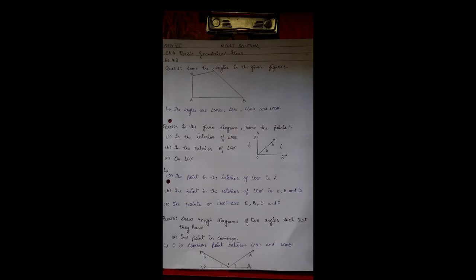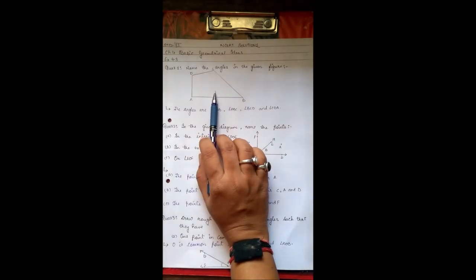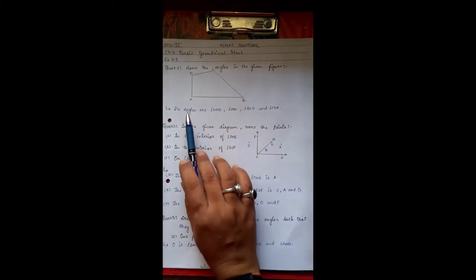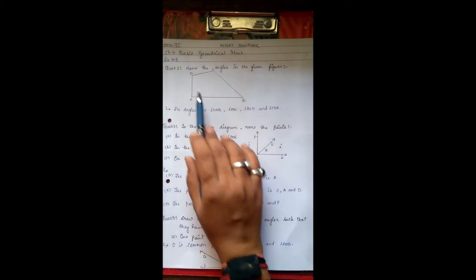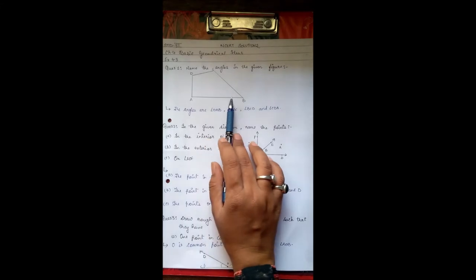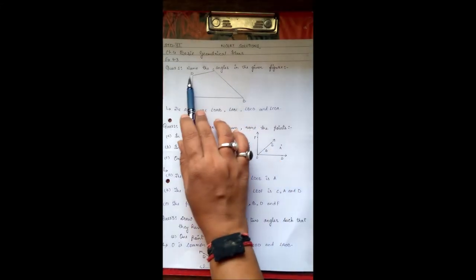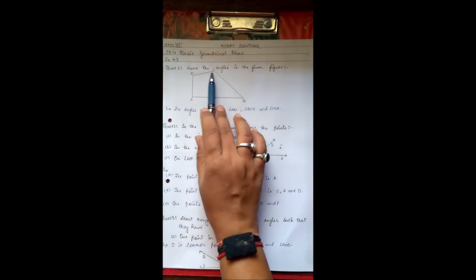The first question is: name the angles in the given figure. This is the figure which is given to us. We have to name the angles. So the angles are DAB, ABC, BCD, and CDA. These are the four angles of the given figure.